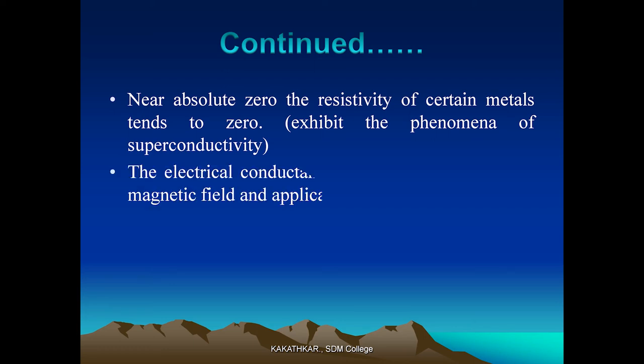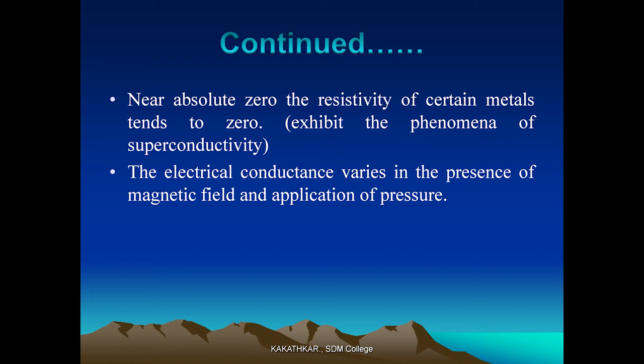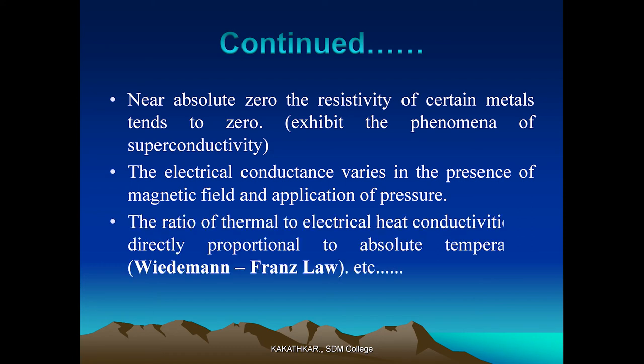Next, electrical conductance varies in the presence of a magnetic field and on application of pressure. If you place a current-carrying conductor in a magnetic field, the conductivity changes. Similarly, external pressure on a current-carrying conductor changes conductivity and current flow. Also, the ratio of thermal to electrical conductivity is directly proportional to absolute temperature.